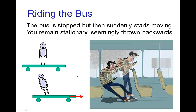A more simple, common example of this would be if you're riding on the bus, and the bus is sitting at a stoplight so it's not moving, but then it suddenly starts moving quickly — so it accelerates. Well, you will remain stationary at rest until there's a force acting on you. So in this case, it seems as if you are thrown backwards as the bus moves out from underneath you.